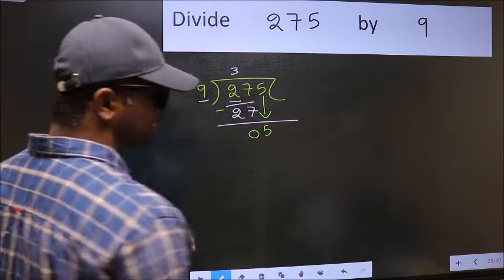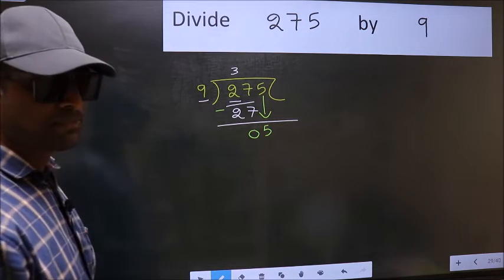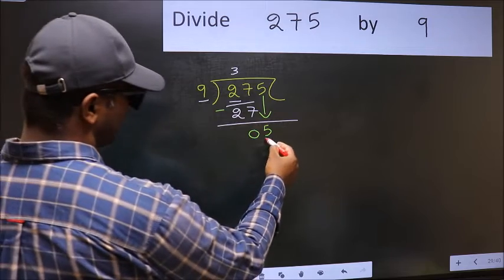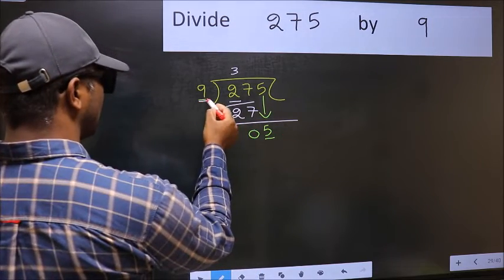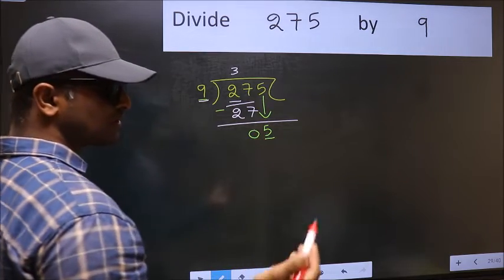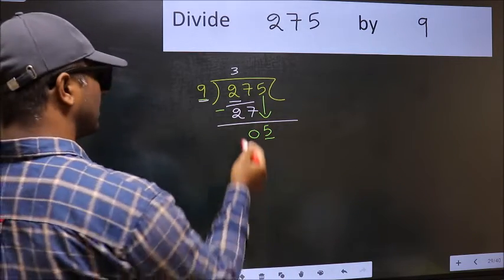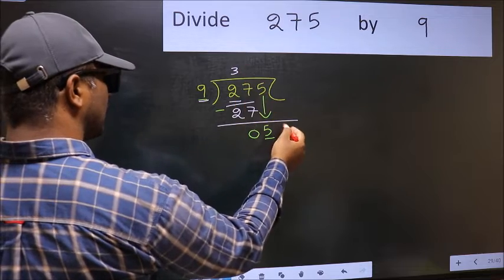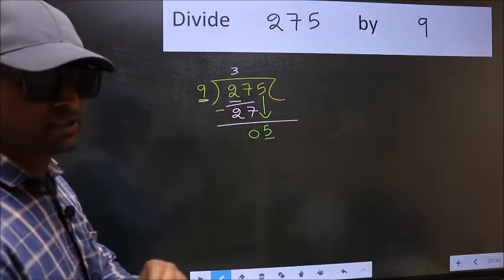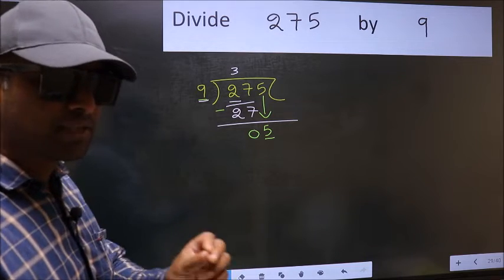After this step, the mistake happens. And the mistake is this. Here we have 5 and here 9. 5 is smaller than 9. So what many do is they directly put dot and take 0. Which is wrong.